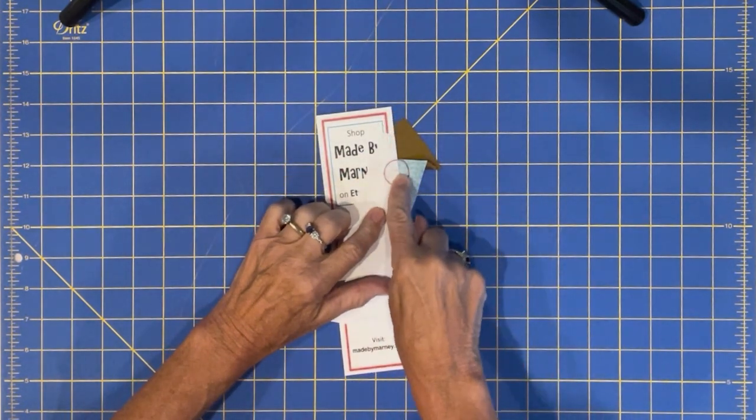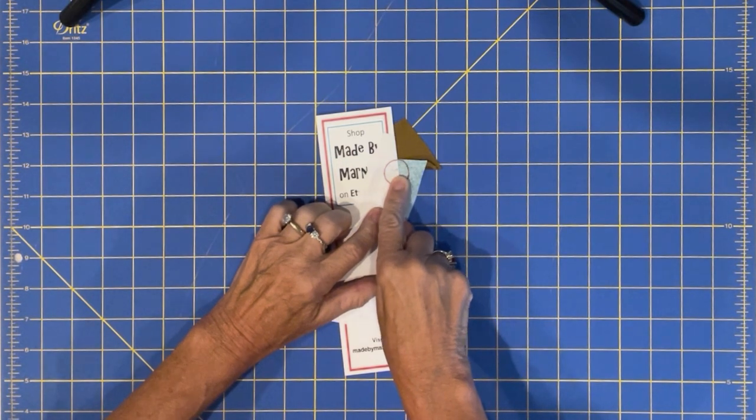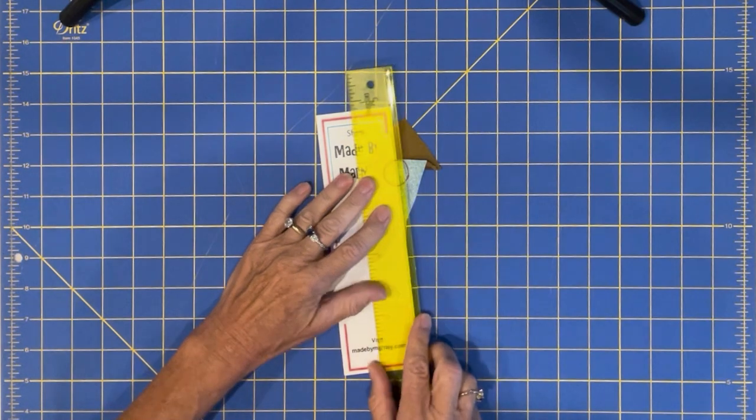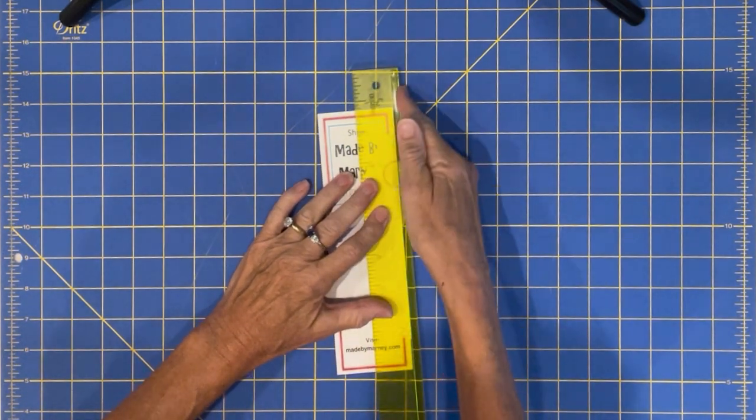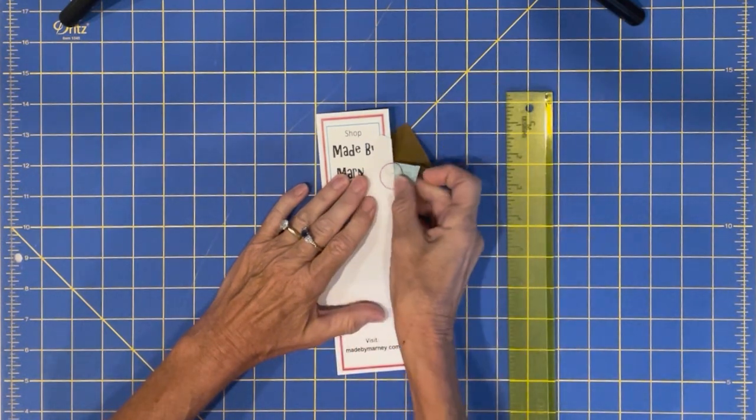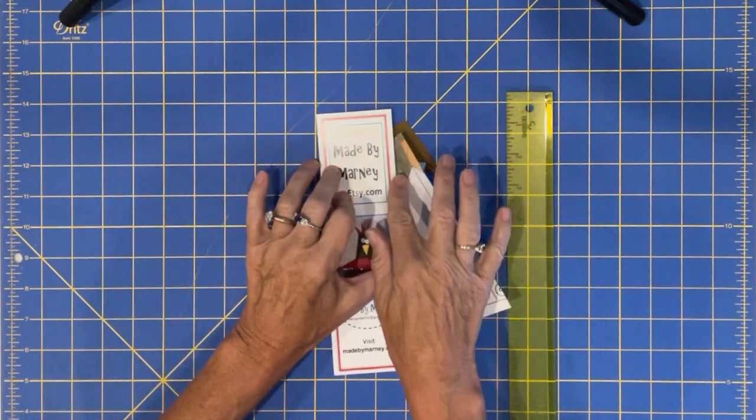So now I can lay on my ruler and trim this to a quarter inch and it's all nice and flat. And then I'll be ready to line up for piece number three.